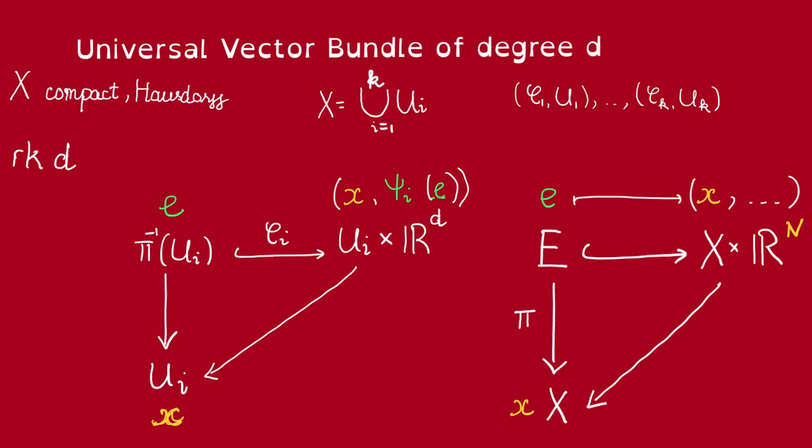Well, no problem because every point in E, in this big E, is going to lie inside the fiber of some U_i, one of these U_i. So we could just patch this psi_i together. And the way to patch local information into global information is to use a partition of unity. So let lambda_1 to lambda_k be a partition of unity subordinate to U_i.